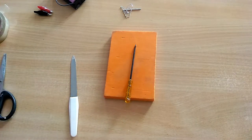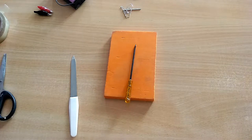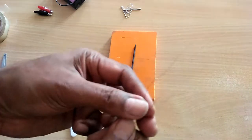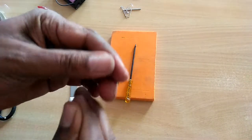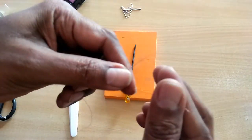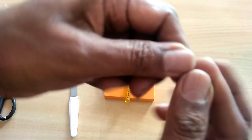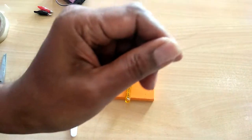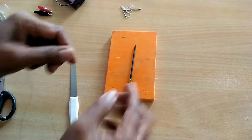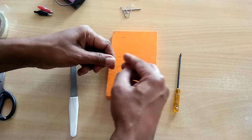We will wind the enameled copper wire over the metallic portion of the screwdriver and connect the ends of the copper wire to a battery. For that we will need to remove the enamel from the ends of this copper wire.